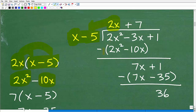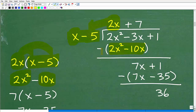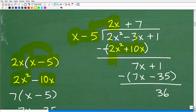Now I'm going to subtract that from the polynomial, just like we did with numbers. Distribute the negative: the 2x squared terms cancel to zero, and combining the x terms I get 7x. Then I drop down the remainder of the polynomial, giving me 7x plus 1. If you understand what I just did, that's the algorithm — we're just going to repeat it.